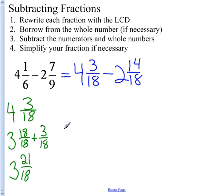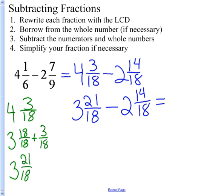So I rewrite my 4 and 3 18ths to what I just found out here is 3 and 21 18ths. And I'm going to subtract 2 and 14 18ths. Now I can subtract here. 3 minus 2 is 1, and 21 minus 14 is 7, and that's over 18. So my final answer for this is 1 and 7 18ths.